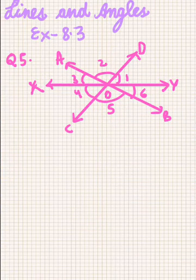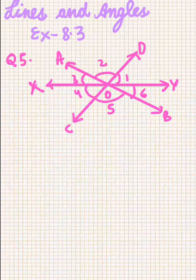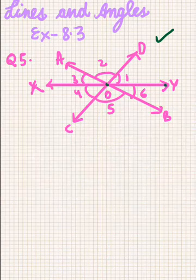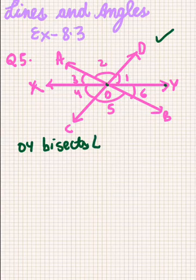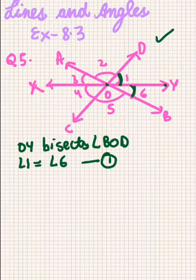Let's move to Question 5, which says: prove that the bisectors of a pair of vertically opposite angles are in the same straight line. For this question, I have drawn this diagram. Ray OY bisects angle BOD, so angle 1 equals angle 6. This is our first equation.